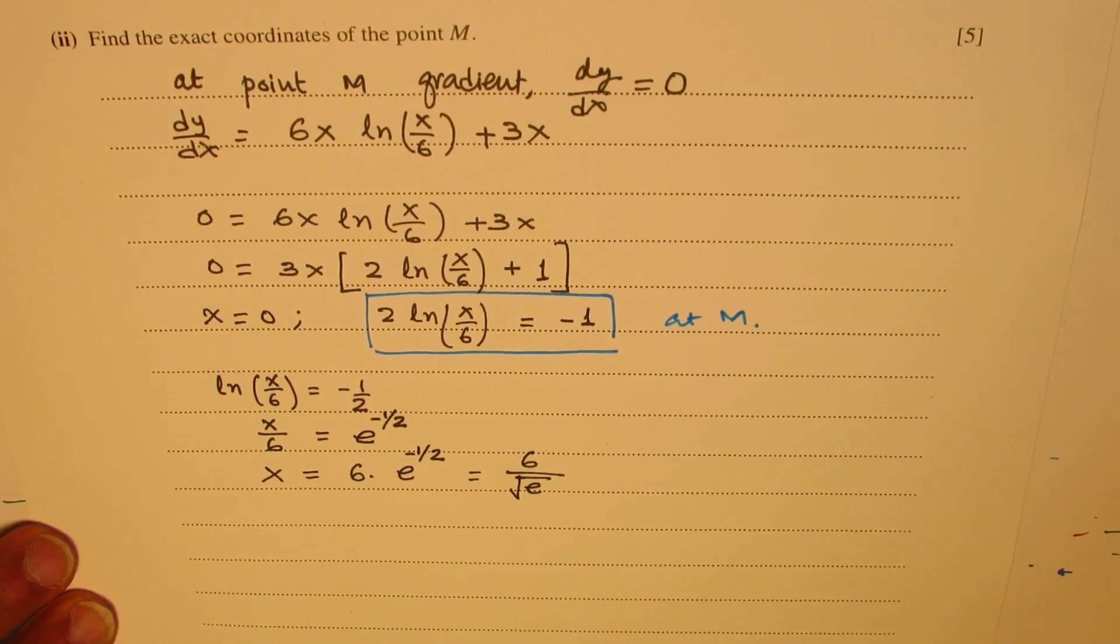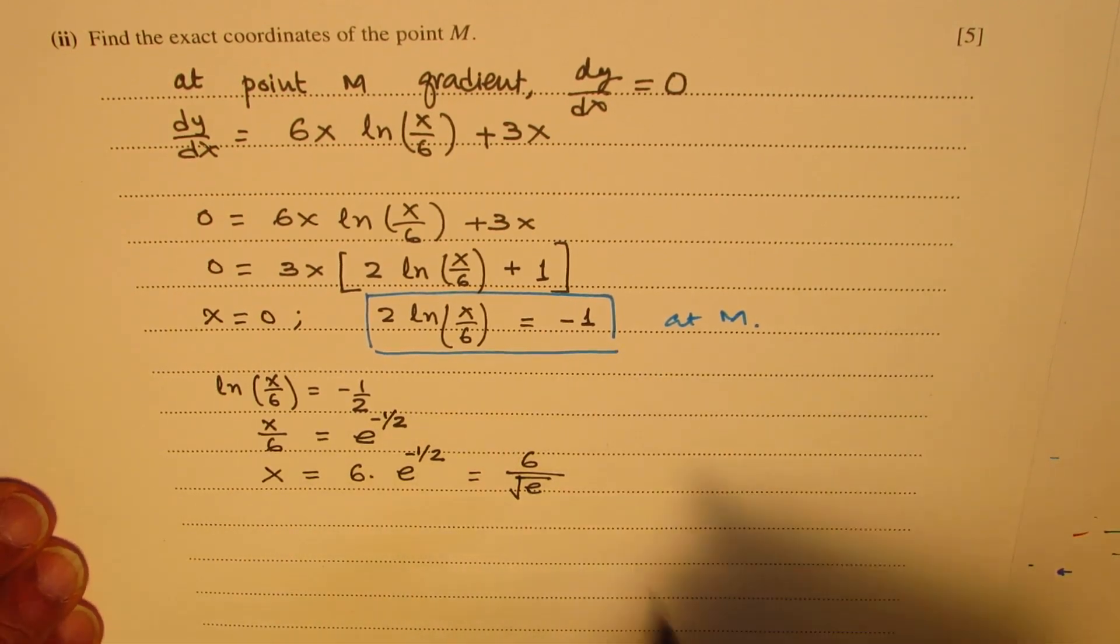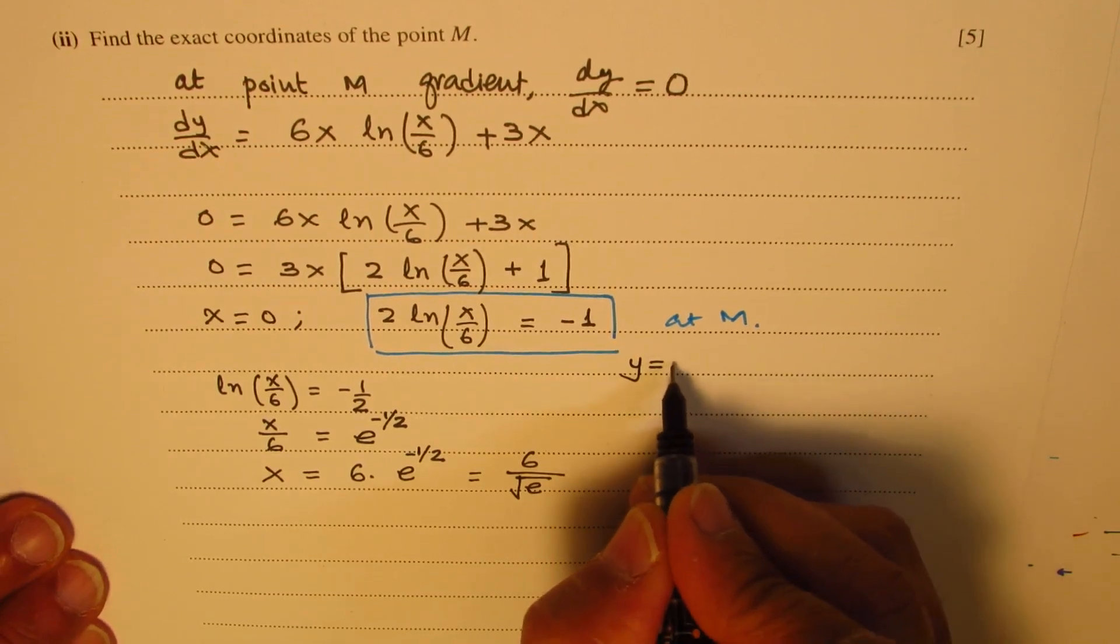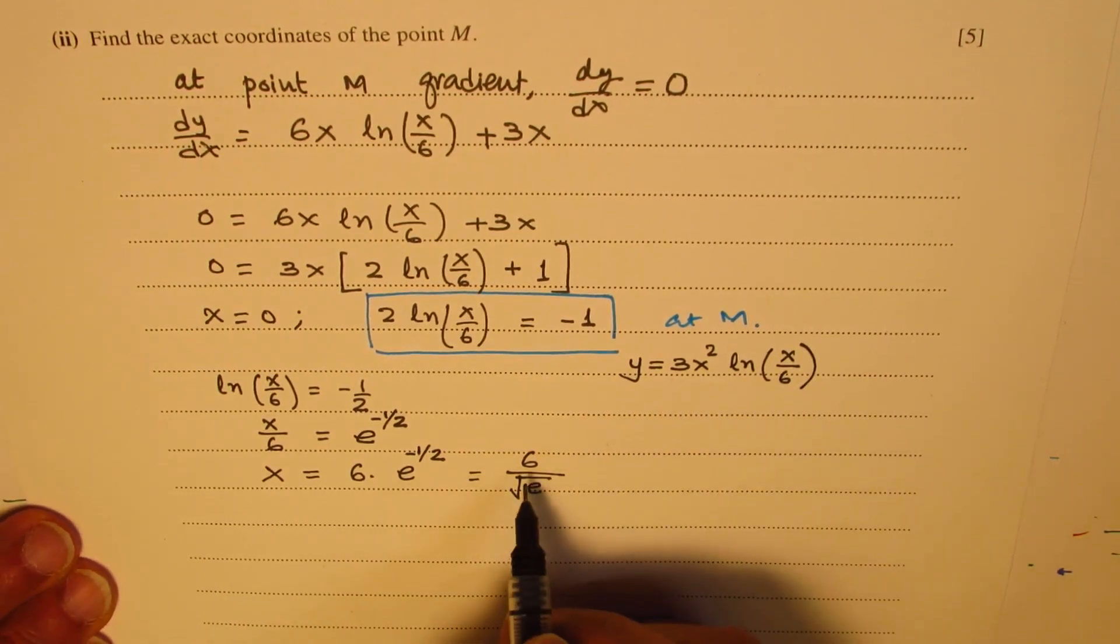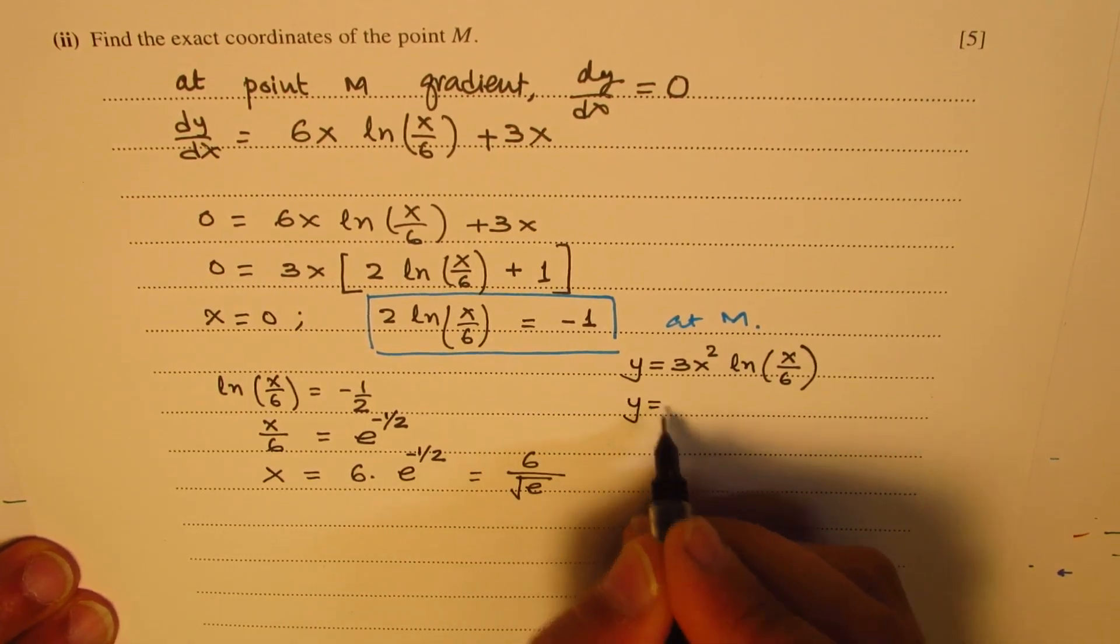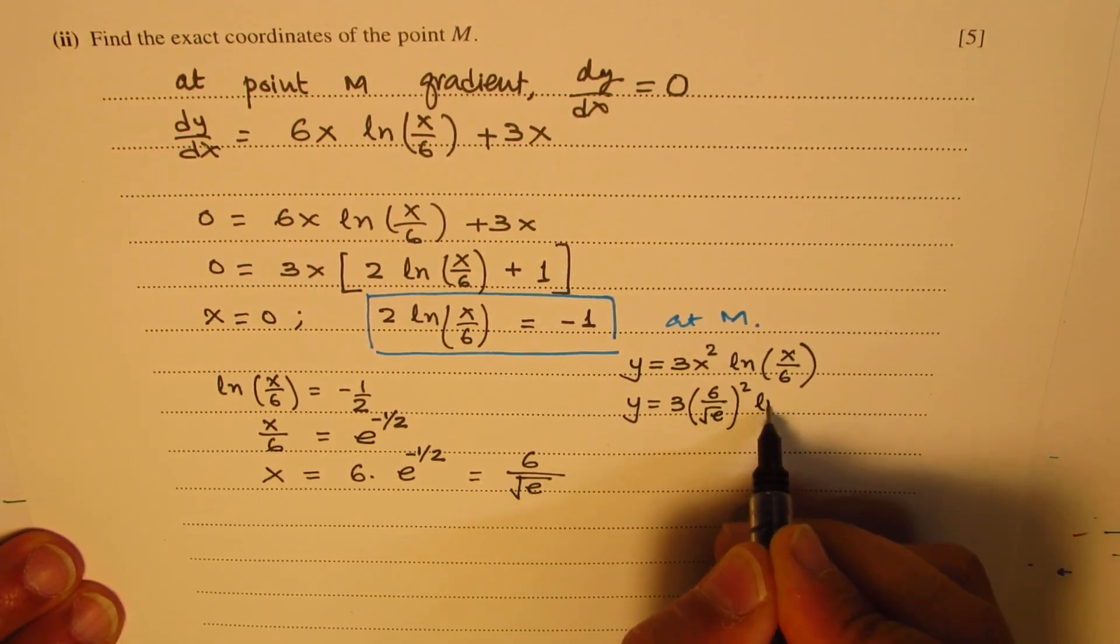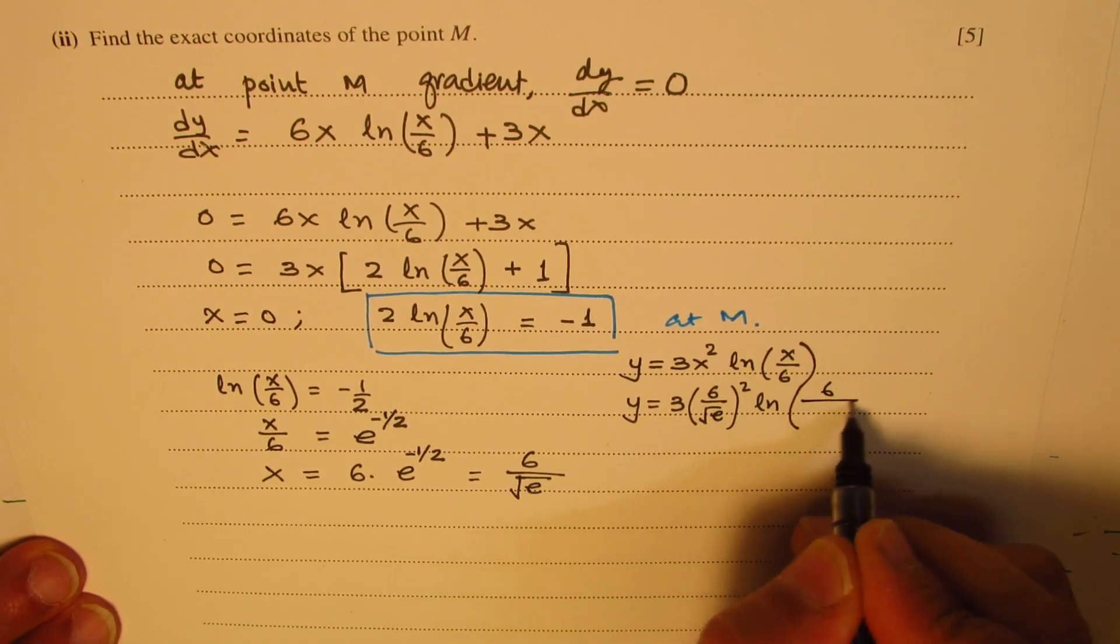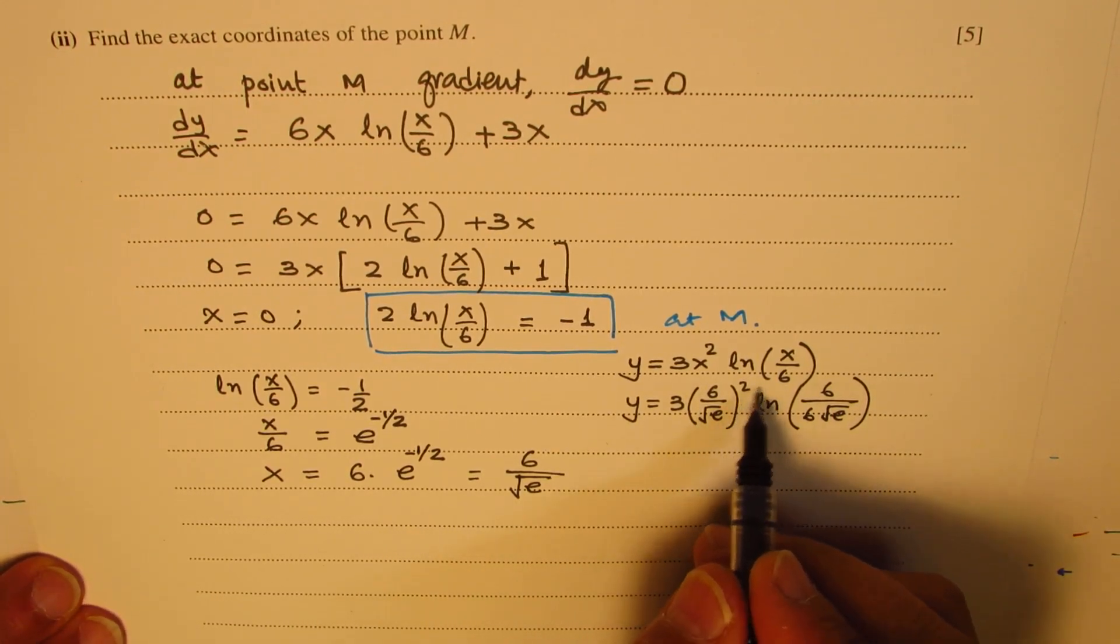Now, let's also find the y value. The curve given to us is y equals 3x squared ln(x/6). So we can substitute this value here to find the value of y. So we get y equals 3 times (6/√e) squared times ln(6/(6√e)). When you square this, you get 3 times 36/e.